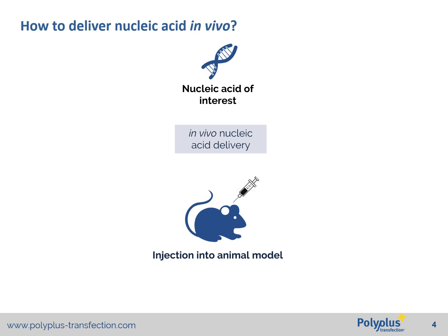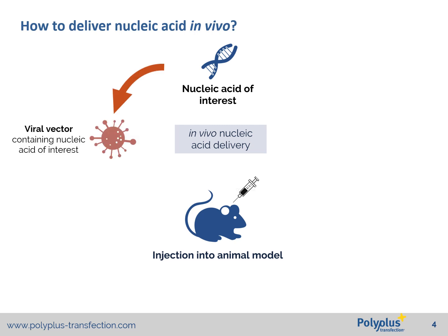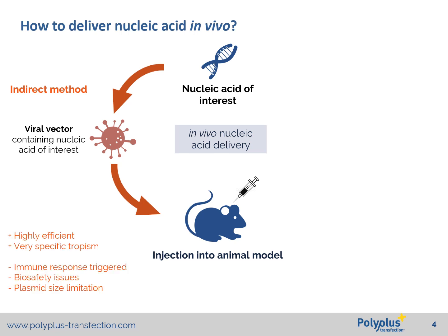The first option is to use a viral vector containing the nucleic acid of interest. This is a commonly used method to deliver nucleic acids in vivo because it has several advantages — it is highly efficient and you can target specific tissues or cells. There are limitations: you need a suitable biosafety environment to manipulate and produce viral vectors. The size of the nucleic acid is limited, and direct injection of viral vector can trigger an immune response in your animal model.